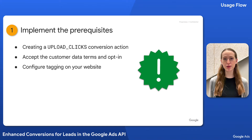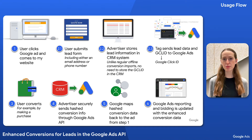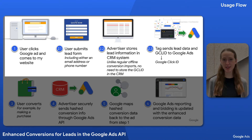First, a reminder to implement the prerequisites before getting started on your implementation. If you watched the introduction video, you already know about the prerequisites, which include creating an upload clicks conversion action, accepting the customer data terms, opting in to enhanced conversions for leads, and configuring tagging on your website. Once you've implemented the prerequisites, you're all set up to collect and send to Google Ads the information that users submit when they fill out the lead form on your website.